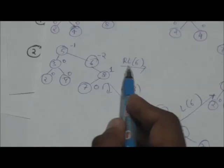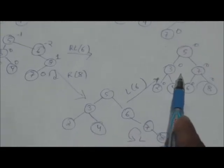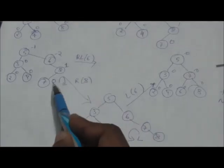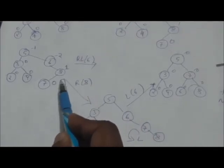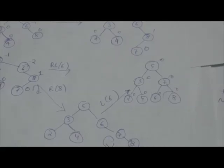To balance this tree, we need to perform a double right-left rotation at the subtree rooted at node 6. First we perform a single right rotation on the right subtree, then we perform a single left rotation on this subtree. After that we get this balanced AVL tree.